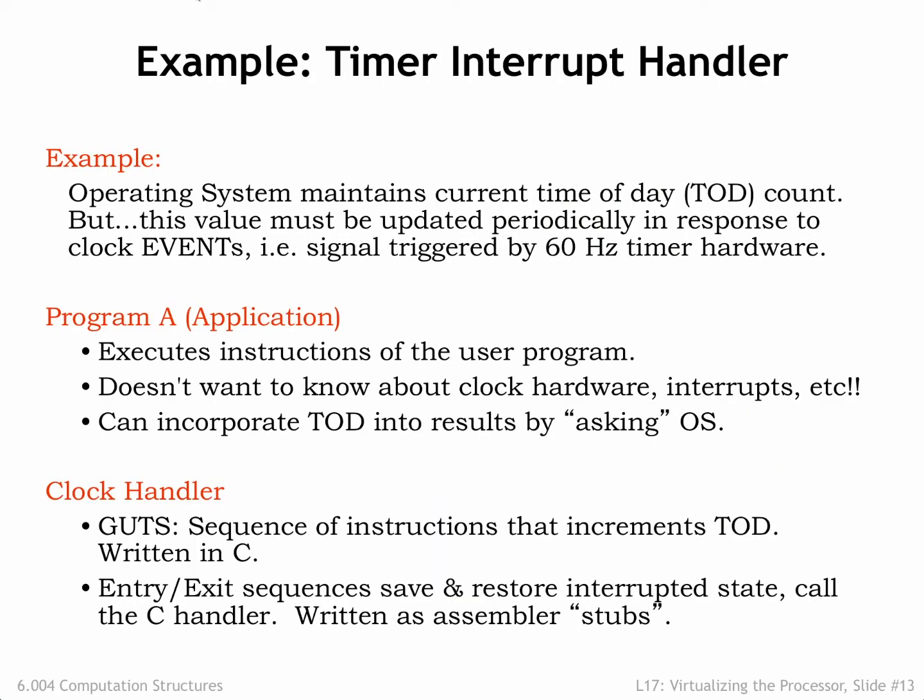Here's how the timer interrupt handler would work. Our initial goal is to use the timer interrupt to update a data value in the OS that records the current time of day. Let's assume the timer interrupt is triggered every 60th of a second. A user mode program executes normally, not needing to make any special provision to deal with timer interrupts. Periodically, the timer interrupts the user mode program to run the clock interrupt handler code in the OS, then resumes execution just as if the interrupt had not occurred. If the program needs access to the time of day, it makes the appropriate service request to the OS.